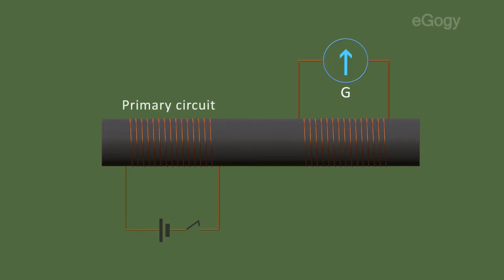Of these, the circuit connected to the battery is called the primary circuit, and that connected to the galvanometer is called the secondary circuit. There is no interconnection between primary and secondary circuits.